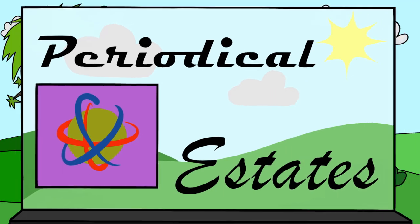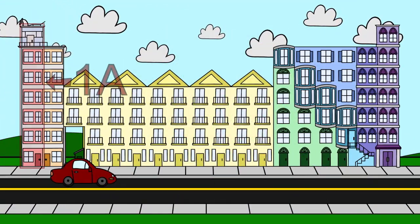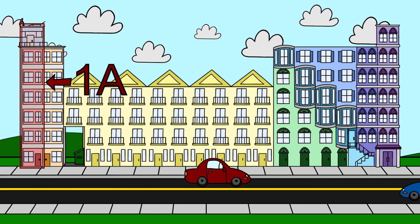Welcome to Periodical Estates, the home of the atom families. In townhome 1A, you'll find the elements with one valence electron.